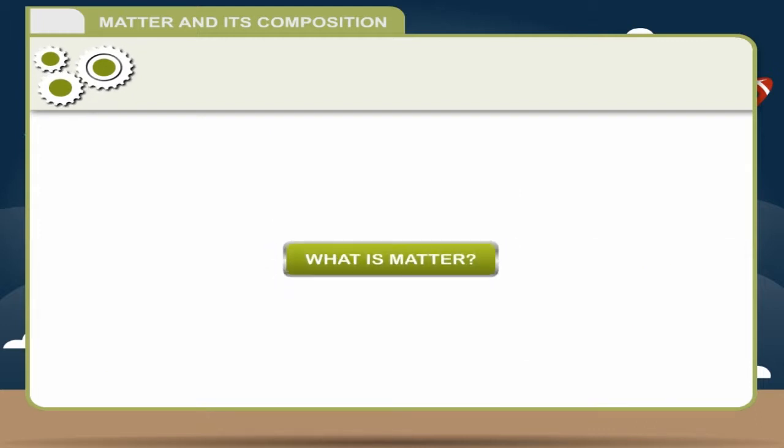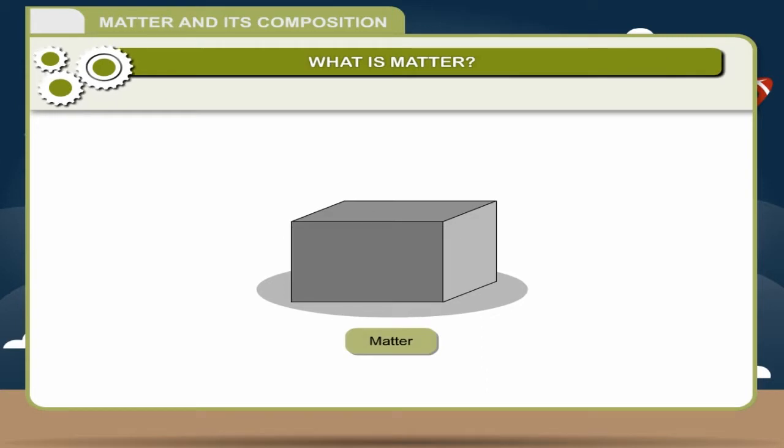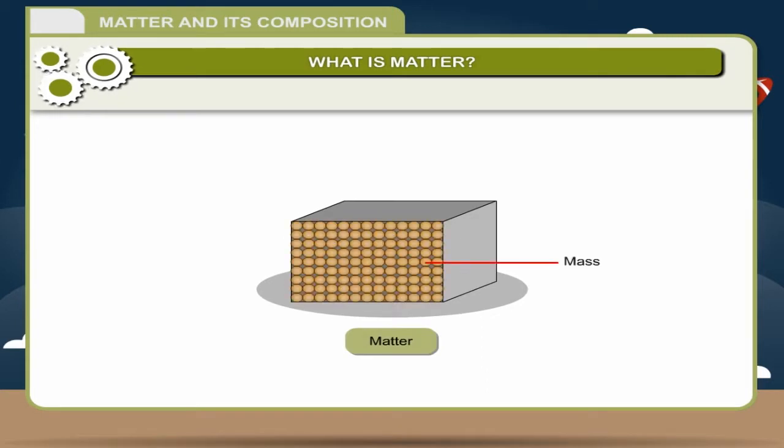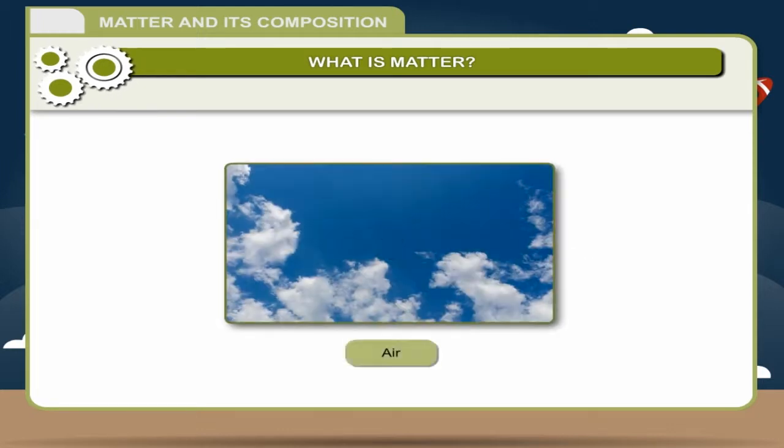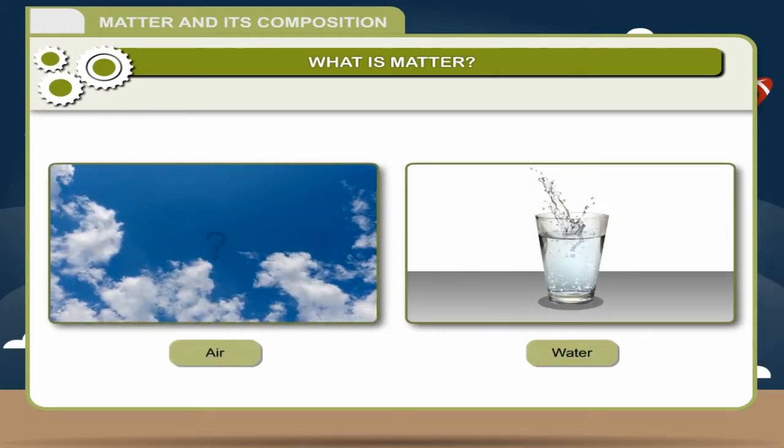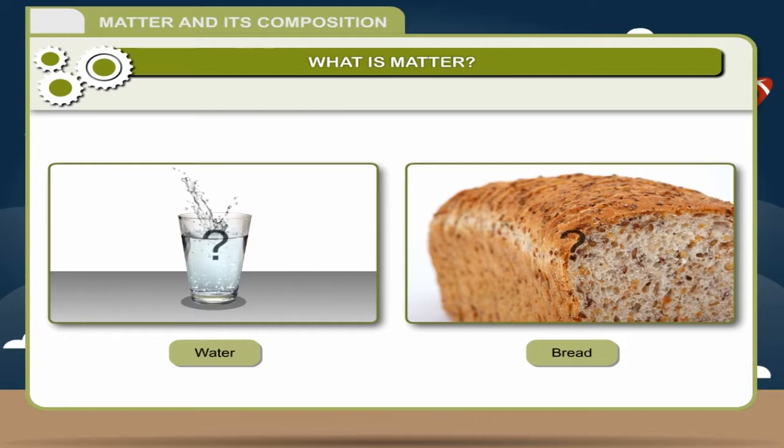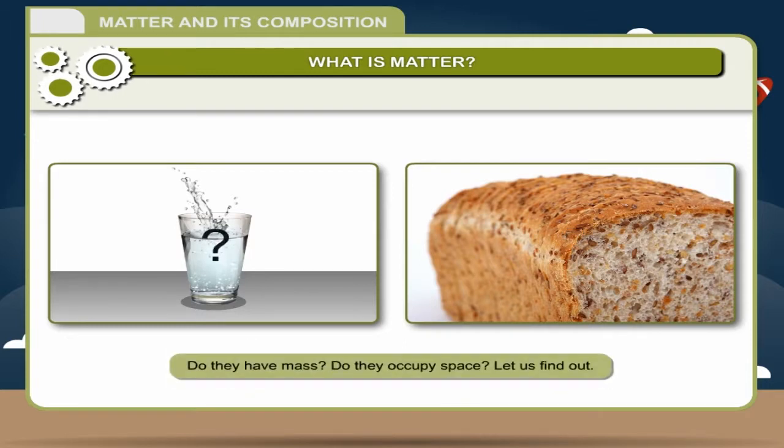What is matter? Matter is defined as anything that has mass and occupies space. Can we call air, water or a piece of bread matter? Do they have mass? Do they occupy space? Let us find out.